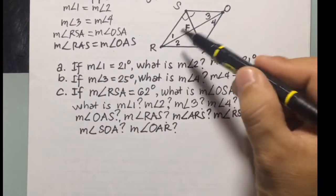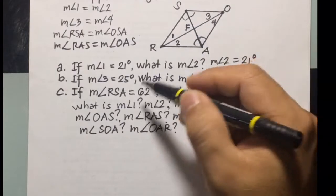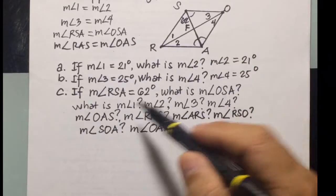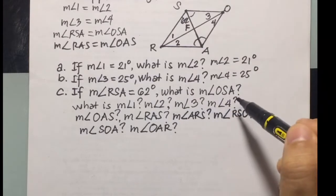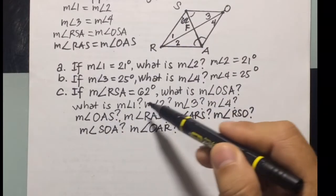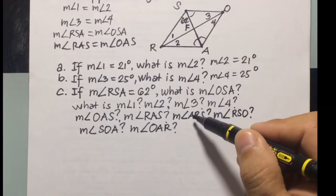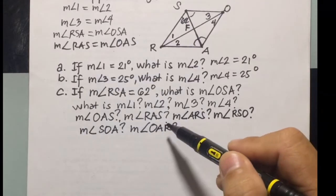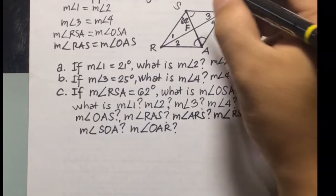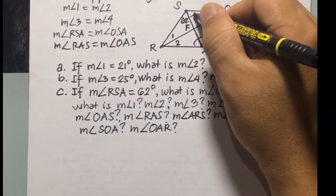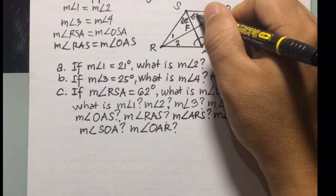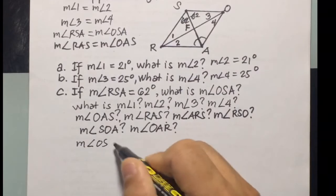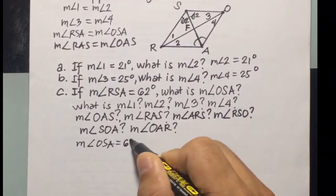If the measure of angle RSA equals 62 degrees, what is the measure of angle OSA? Since the diagonal bisects the angle, this means angle OSA is also 62 degrees. So the measure of angle OSA equals 62 degrees.